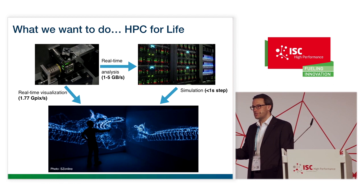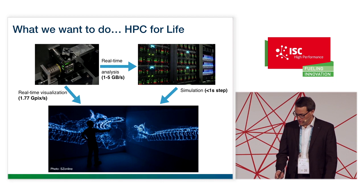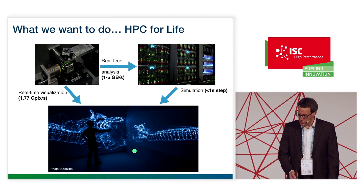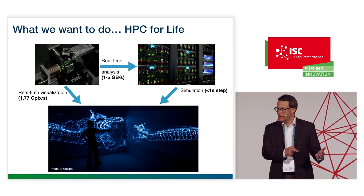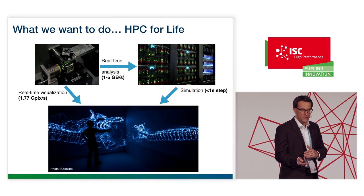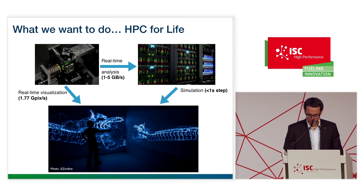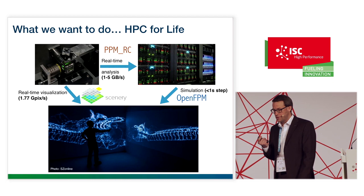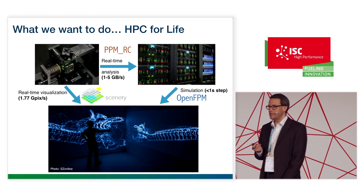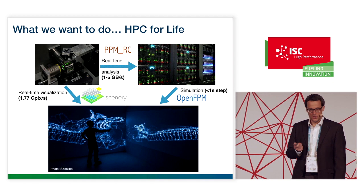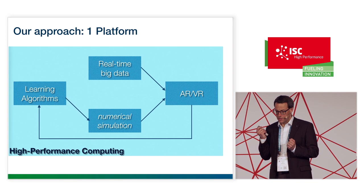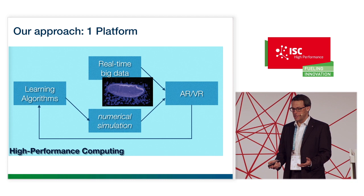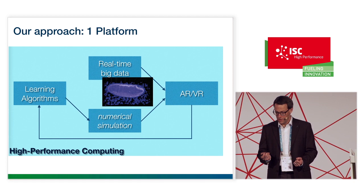We use three-dimensional geometry models to simulate physics-based hypotheses — for example, solving the governing equations of blood flow in order to predict what the flow would look like. We can process the images faster than the microscope can acquire them, solve the fluid flow equations in the vasculature, and use the velocity of the red blood cells — which can be observed — to calibrate the simulation, then read out things that cannot be directly measured, such as the pressure in the flow or the wall shear stresses the flow exerts onto the vessel. We combine these technologies — Scenery for the virtual reality part, PPMRC for real-time computer vision, and OpenFPM as a simulation platform — in a classical reverse engineering loop. For example, we take a fly embryo sliced open along a meridional line and unwrapped into a plane, then solve equations describing cell movement and get velocity fields of how the cells presumably move.